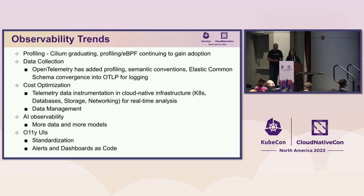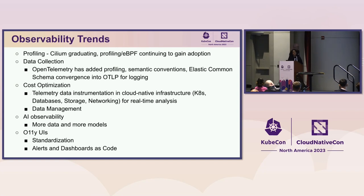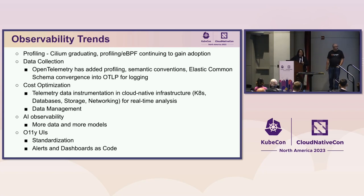Data collection continues to have a lot of velocity in innovation. OpenTelemetry just added profiling as the fourth signal for telemetry, as well as semantic conventions which are super important for guaranteeing interoperability across different versions of software components. The Elastic Common Schema, which has been used in the logging space, has also converged and been donated by Elastic into the OpenTelemetry project, landing into OTLP — the OpenTelemetry Protocol. This is very significant for logging because it converges an ad hoc industry standard into a new standard for a new generation of applications and infrastructure.